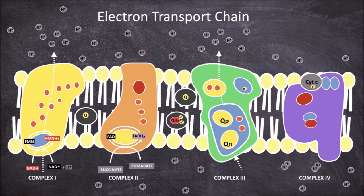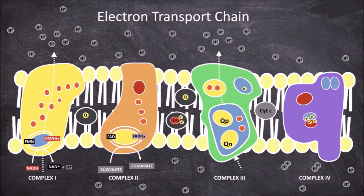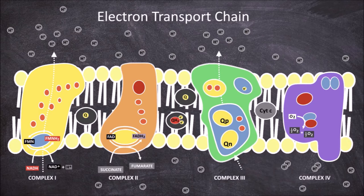Cytochrome C transfers a single electron to the CuA center in complex 4. Four cytochrome C molecules sequentially pass on four electrons into complex 4. Each electron is then passed on to the heme A site, then transferred to the CuB and heme A3 site. At this site, the four electrons split an oxygen molecule into two oxygen atoms, which can be denoted as half oxygen. This oxygen molecule is the final acceptor of electrons in the electron transport chain. Oxygen is essential as it takes the electrons that would otherwise block the chain, so it can continue running. Each half oxygen accepts two hydrogen protons from the matrix, each forming a water molecule.